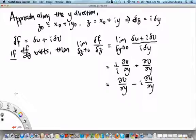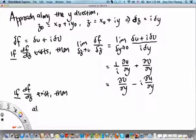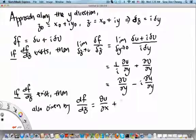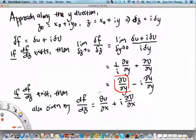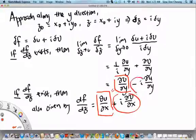But of course, we remember that if df/dz exists, then its value is also given by df/dz = ∂u/∂x + i∂v/∂x. So if we compare these two expressions for df/dz, we find that this is the real part if you approach along y, and this is the real part if you approach along x. These two must be equal in order for the two derivatives to be equal. And the same thing is true for the imaginary parts. Therefore, if we equate these two sets of partial derivatives...